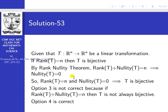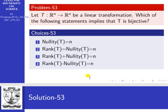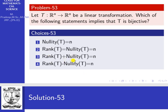So rank of T equal to n and nullity of T equal to 0 satisfies two options. The third option satisfies rank of T equal to n, nullity of T equal to 0. And the fourth option also satisfies rank of T equal to n, nullity of T equal to 0. So which one is the correct option? Because this is a Part B problem, only one option is correct.